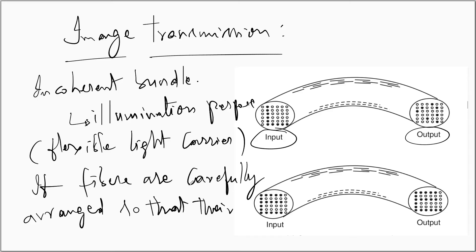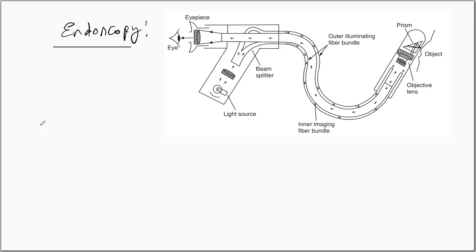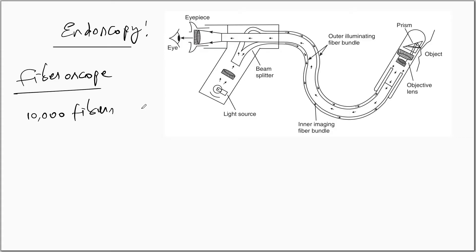The image transmission principle is used in endoscopy. One of the most important applications of a coherent bundle is endoscopy. In medicine, endoscopy is used as a diagnostic tool. An endoscope is essentially an optical instrument which facilitates visual inspection of the internal organs of the human body — or any animal. It is also called a fibroscope. In an endoscope, about 10,000 fibers are bundled in approximately 1 millimeter diameter cable, and objects with a separation of 70 micrometers can be visualized.